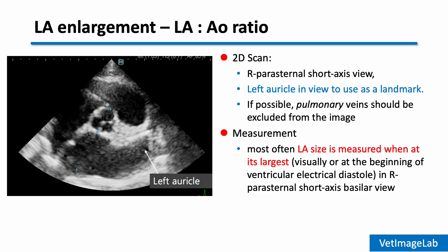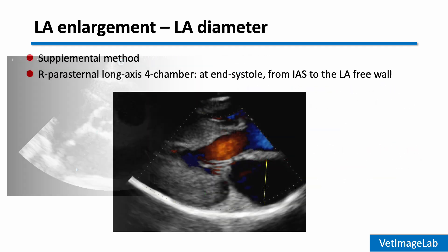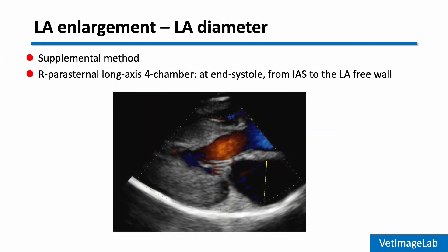For accurate measurement, we assess the left atrial diameter at its largest size, either visually or at the beginning of electrical diastole. We can also use direct linear measurements of the left atrial diameter as a supplemental method to assess left atrial enlargement.